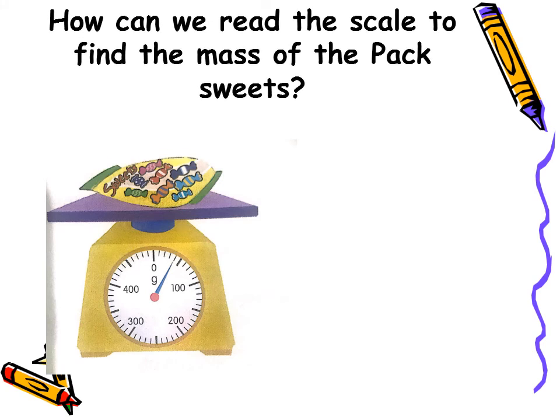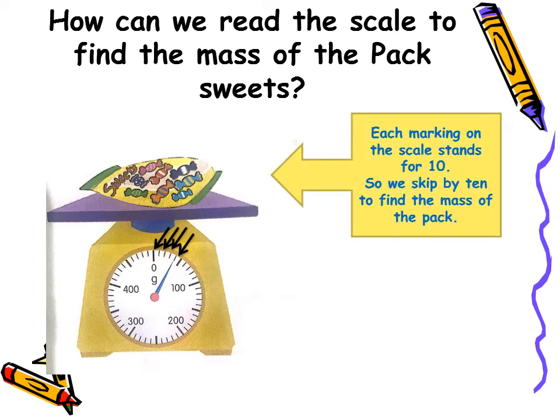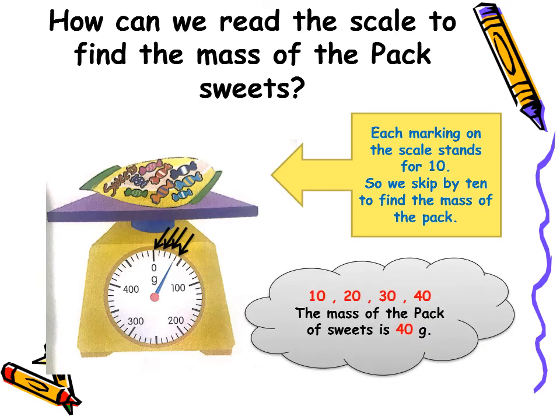How can we read the scale to find the mass of the pack of sweets? Each marking on the scale stands for 10. The small lines on the scale — each line stands for 10. So to find the mass of the pack of sweets, I have to skip count by 10. Let us start: 10, 20, 30, 40. The mass of the pack of sweets is 40 grams.